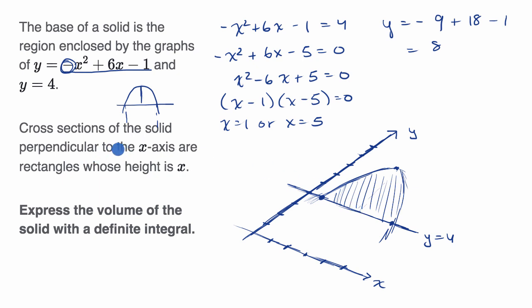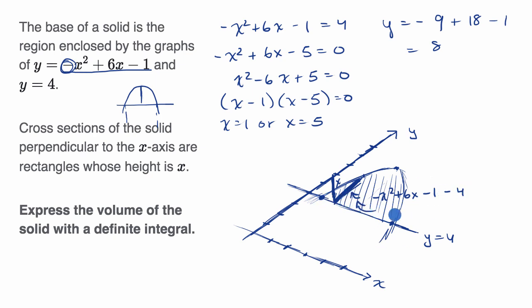They say cross sections of the solid perpendicular to the x-axis are rectangles whose height is x. So this cross section perpendicular to the x-axis is going to have height x. The width of this rectangle is going to be the difference between the two functions — the upper function minus the lower function. That gives us negative x squared plus 6x minus one, minus four, which simplifies to negative x squared plus 6x minus five.